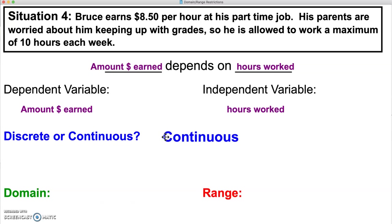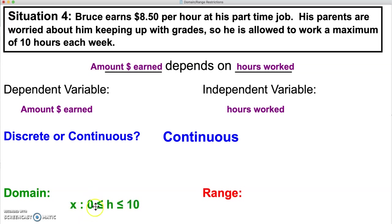That's going to affect how we write our domain and range. Our domain contains all of the x values; the x values here are the hours worked. Think about what our starting value for our hours could be — our starting value is going to be 0, and he can work a maximum of 10 hours. So our domain is going to be written as a continuous interval from 0 to 10, where our hours have to be greater than or equal to 0 but less than or equal to 10.